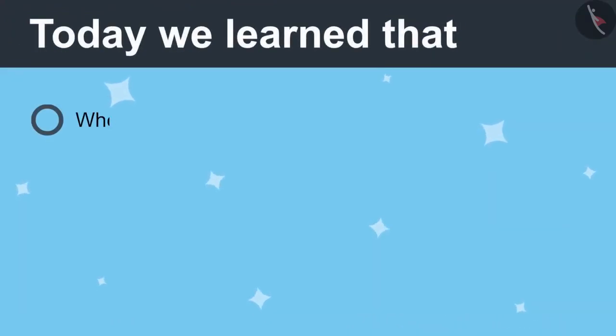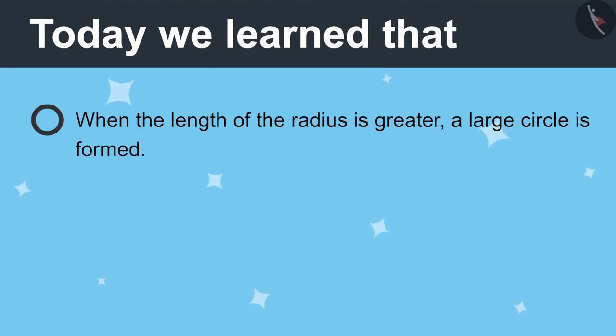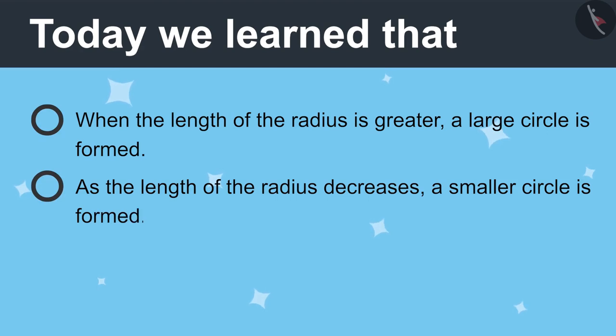Today we learned, when the length of the radius is greater, a large circle is formed. As the length of the radius decreases, a small circle is formed. And there are many radius in one circle.